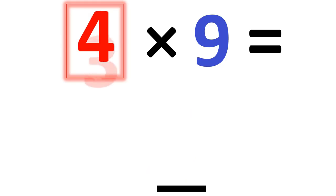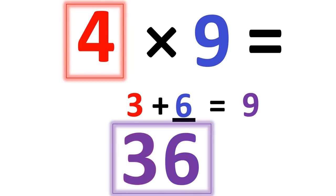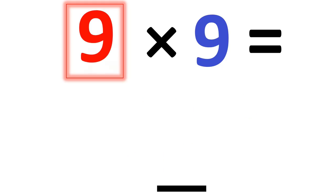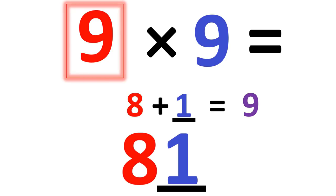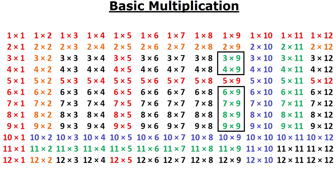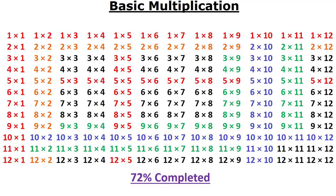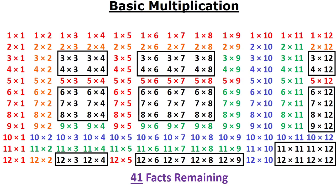4 times 9. 1 less than 4 is 3. 3 plus what number is 9? 6. So your answer is 36. And you can do that all the way up to 9 times 9 to get 81. So now that you know the answer to 2 times 9 to 9 times 9, you also know the reverse. You know 9 times 2 to 9 times 8. So after just learning 6 rules, you now know 103 multiplication facts. That only leaves 41 remaining.